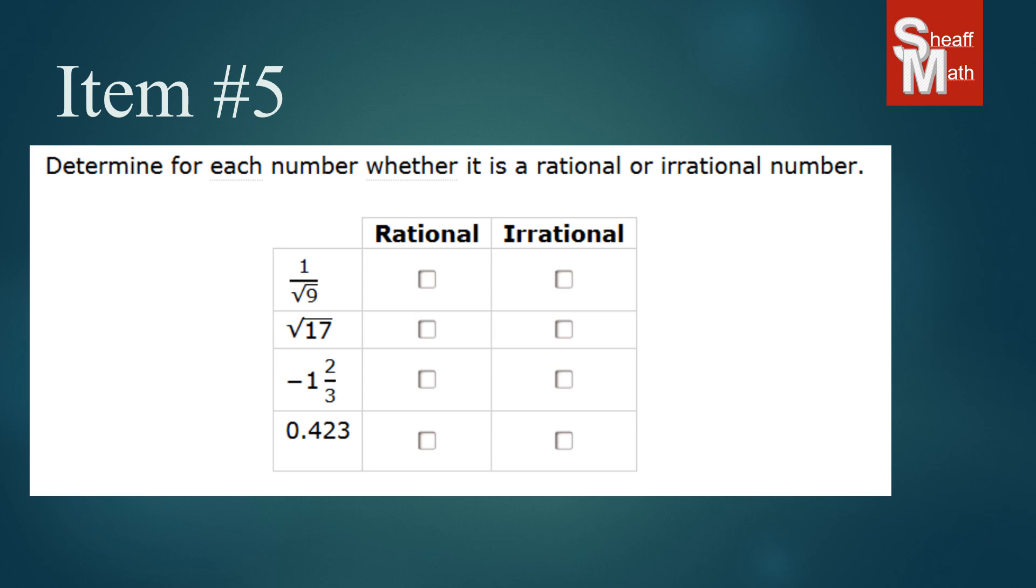Now let's talk about a rational number. A rational number is a number that can be represented as a fraction with a whole number at the top and the bottom.